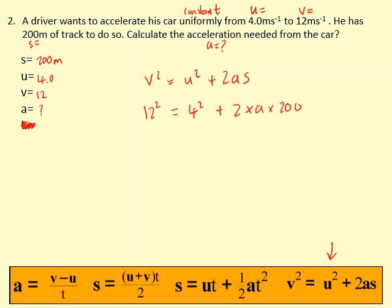And I'm going to make this easier. I'm going to rearrange 12 squared minus 4 squared first, which is equal to 2 times 200, which is 400A. And then I'm going to divide both sides by 400. This gives me A. So I get 0.32 meters per second squared. Don't forget the units.